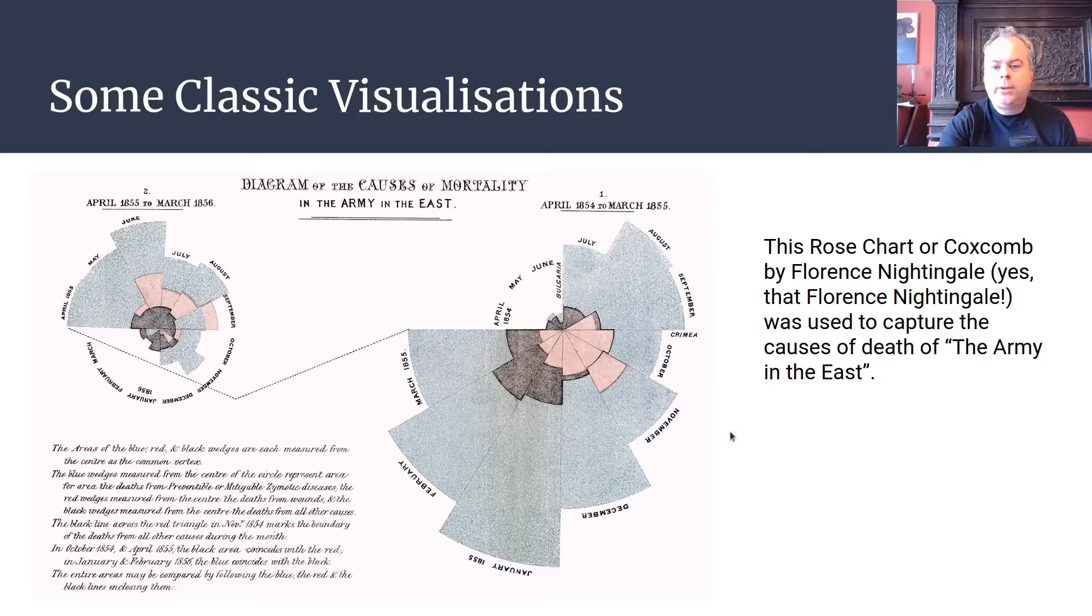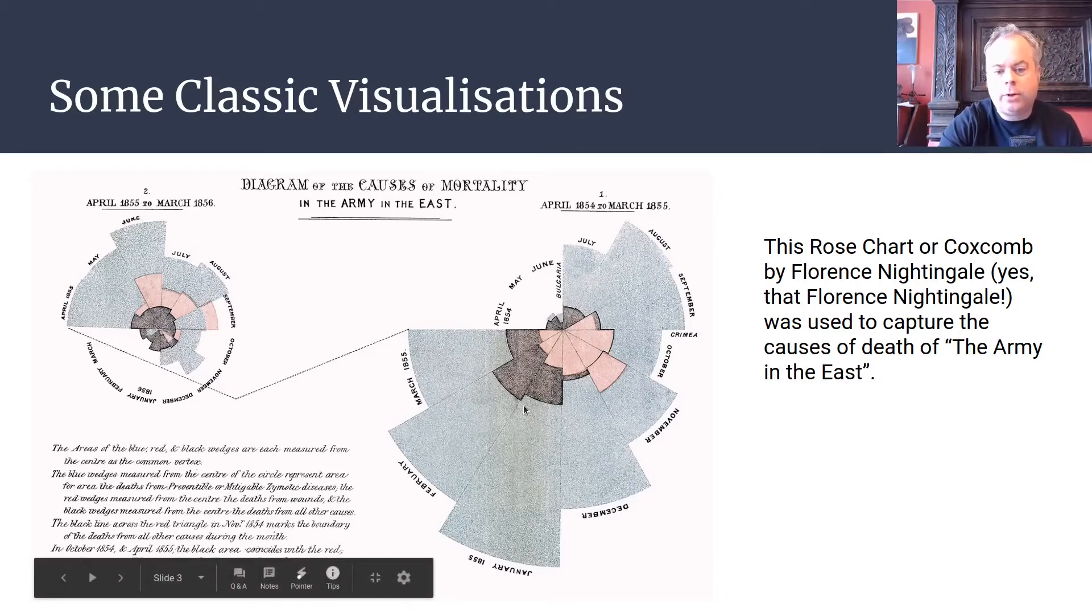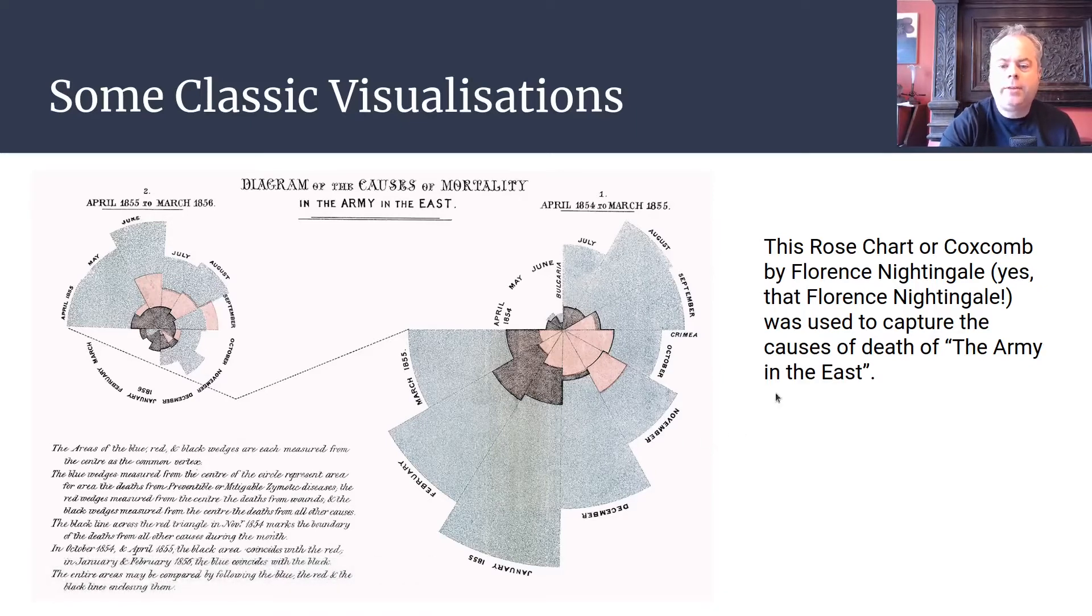These visualizations that she developed capture all the causes of death in the army in the East during the war around the same time as John Snow's visualization, in the mid-19th century. You can read this description here on the left which explains what the colors in each of these different wedges mean. It's a very nice, clear, simple way of communicating potentially some quite complex information to people.